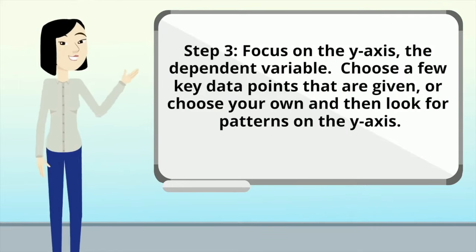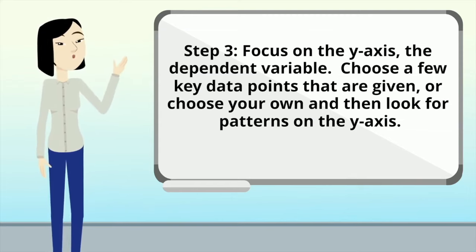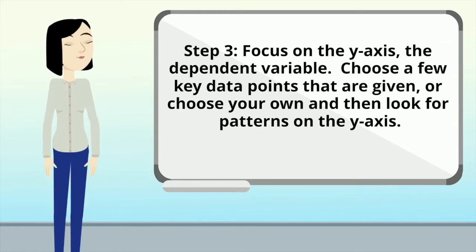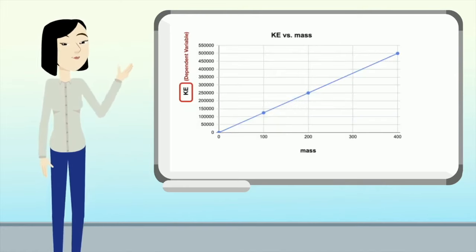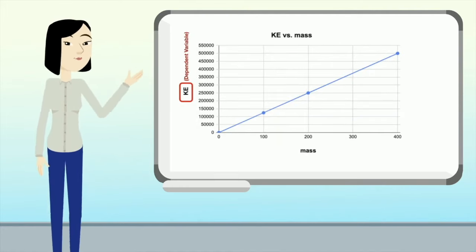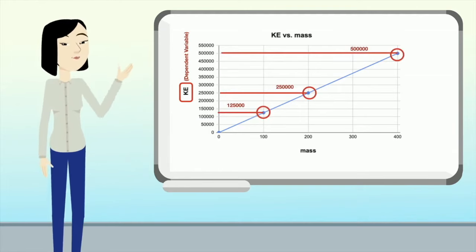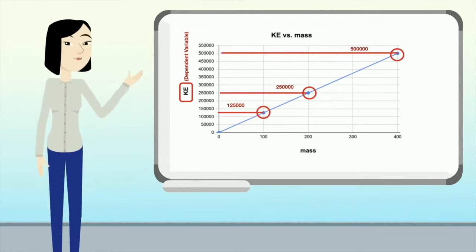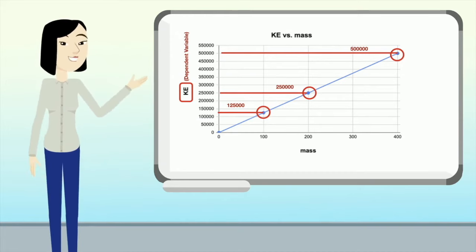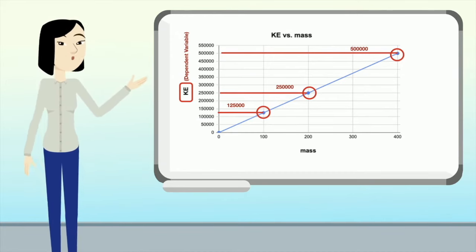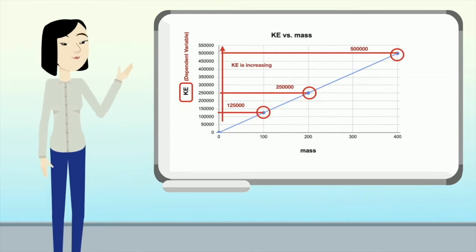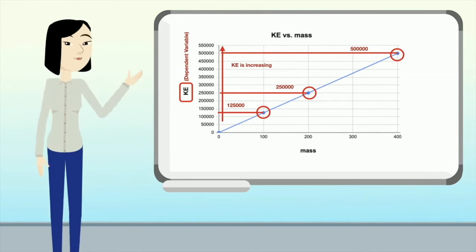In step three, you want to focus on the y-axis, the dependent variable. Again, choose a few key data points that are given or choose your own and then look for patterns on the y-axis. Looking at KE, the first data point is 125,000, the second is 250,000, and the third is 500,000. The numbers are going up, so the KE is increasing.